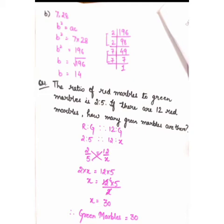Red to green is 2:5 and we take green as x. So 2/5 = 12/x. Cross multiplying: 2 × x = 12 × 5. Transposing 2 to the right-hand side: x = 12 × 5 / 2 = 6 × 5 = 30. Therefore, the number of green marbles is 30.